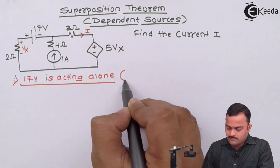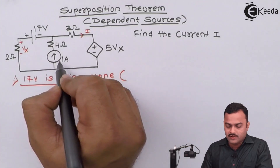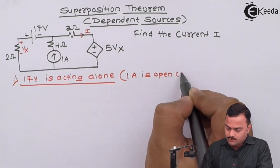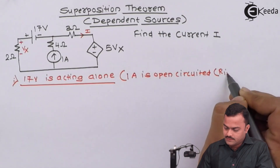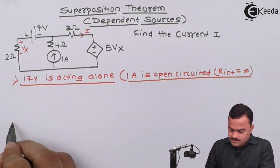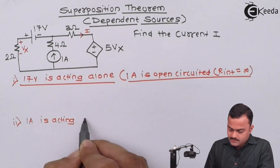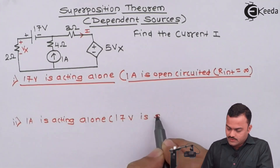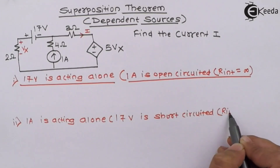When 17V is acting alone, concentrate on the other independent source - the 1A current source. Being a current source, we will open circuit it, because the internal resistance is infinity for a current source. Similarly, for the effect of 1A acting alone, the other independent source is the 17V voltage source. Being a voltage source, we will short circuit it, because the internal resistance is zero for an ideal voltage source.